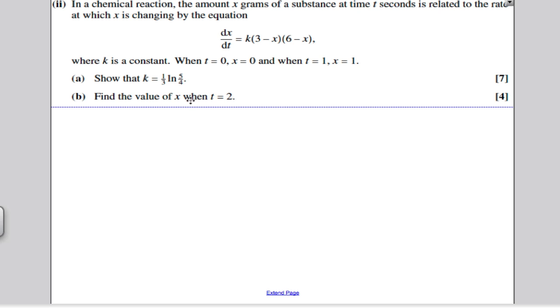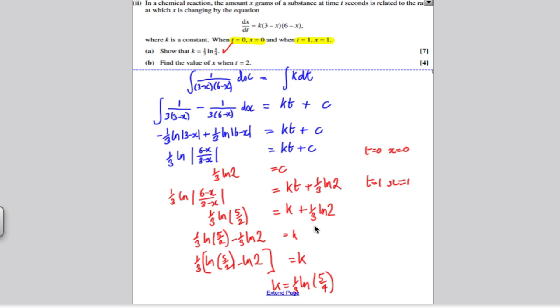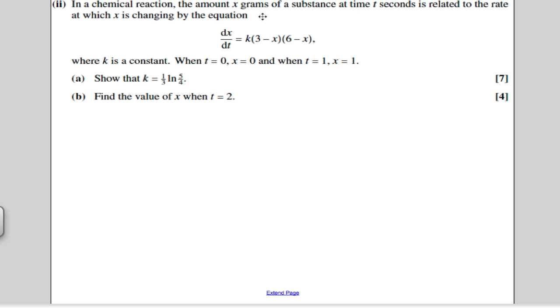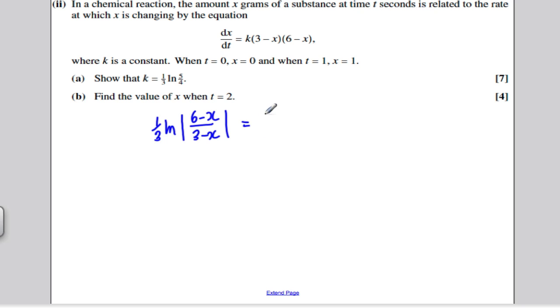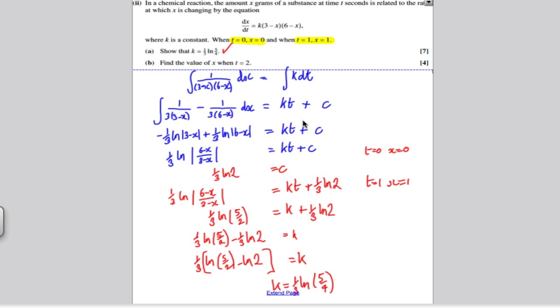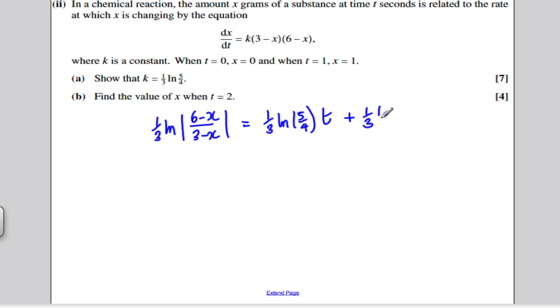So moving on to the last part, it wants the value of x when t is 2. So let's go back and write out our answer to the differential equation, the particular solution. Our answer is then given by this formula here. So it's a third ln((6-x)/(3-x)). So the particular solution is a third ln((6-x)/(3-x)) is equal to. It's kt, and k is a third ln(5/4), so this is a third ln(5/4), all multiplied by t, plus the constant of integration which we had was a third ln 2. So we get plus a third ln 2.